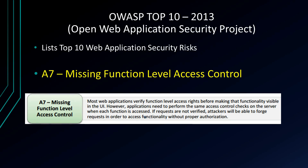Most web applications verify function level access rights before making that functionality visible in the UI. However, applications need to perform the same access control checks on the server when each function is accessed. If requests are not verified, attackers will be able to forge requests in order to access functionality without proper authorization. We're going to look a little further into that.